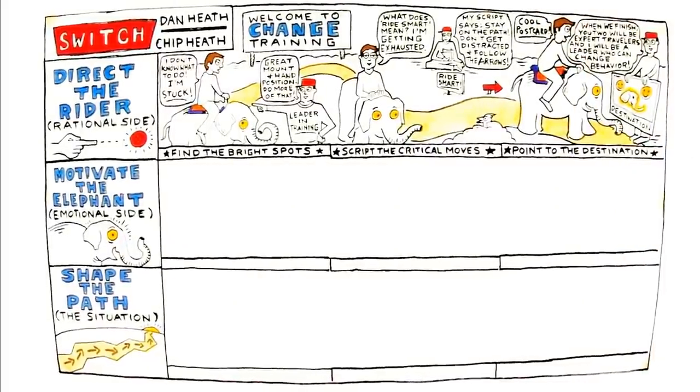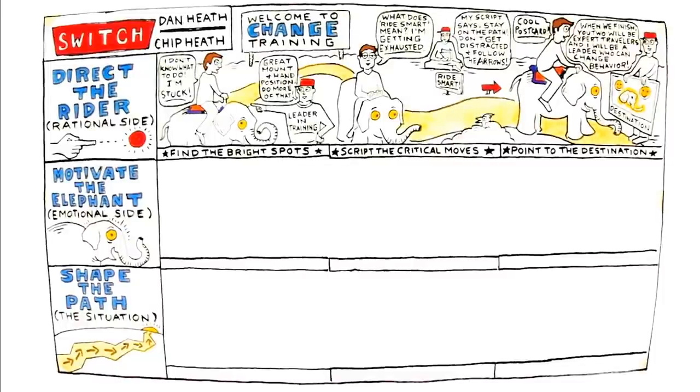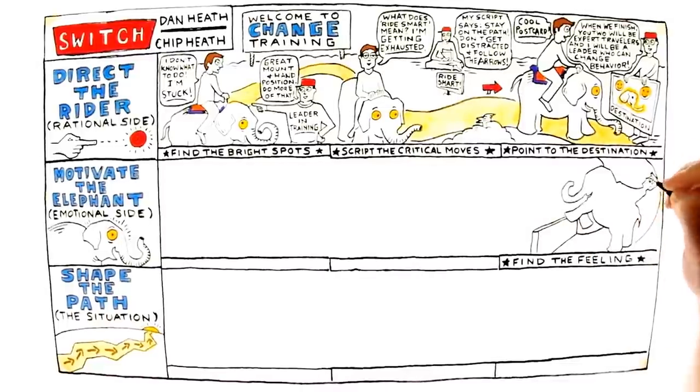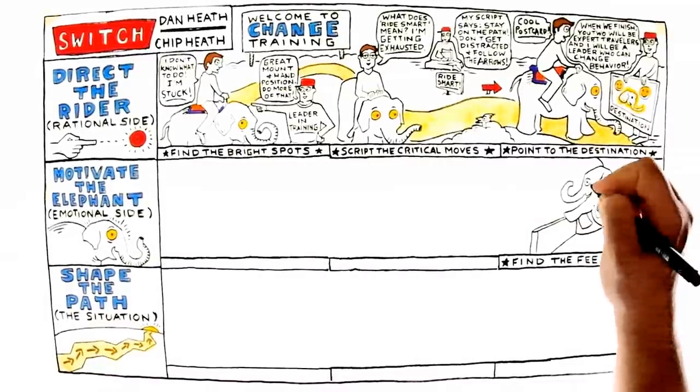Motivate the elephant. Find the feeling. The elephant is motivated by emotion. To motivate people to change, you must find a feeling.